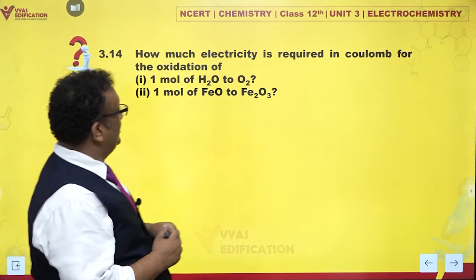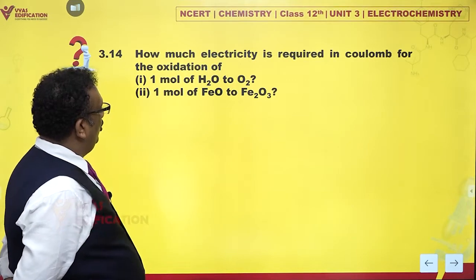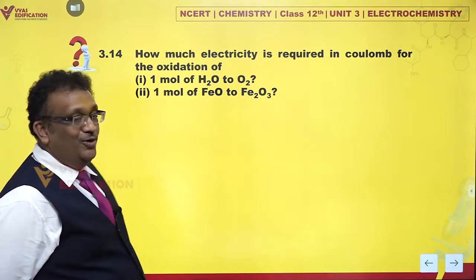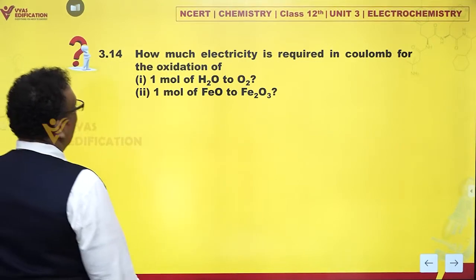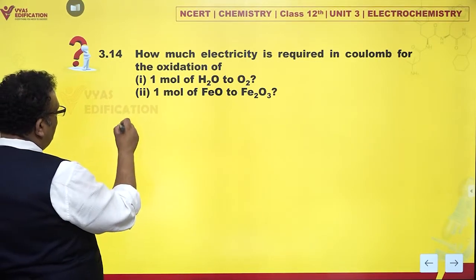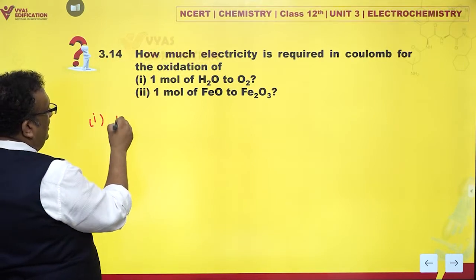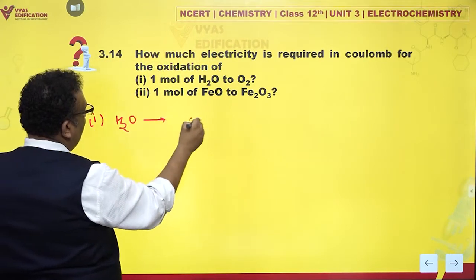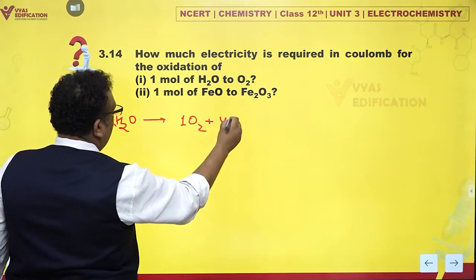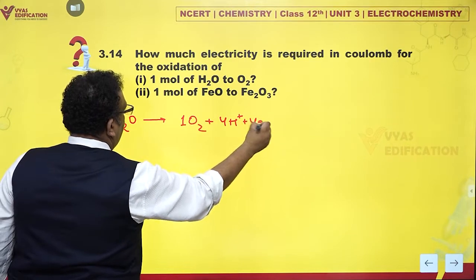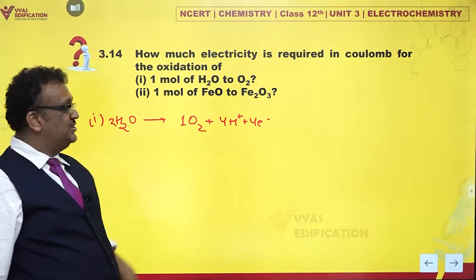How much electricity is required in coulombs for the oxidation of one mole of H2O to O2 and one mole of FeO to Fe2O3? Let's calculate how much electricity. Now if H2O is getting oxidized to O2, I'm solving part one. If H2O is getting oxidized to O2, can I have the equation? So this is required.